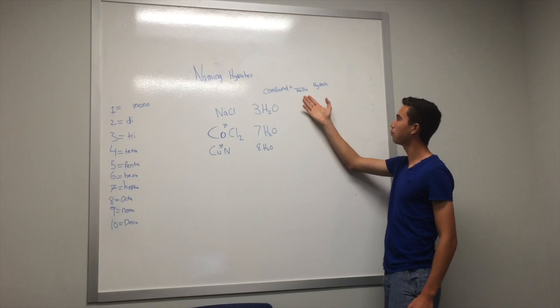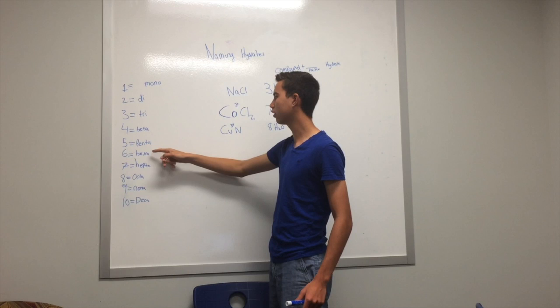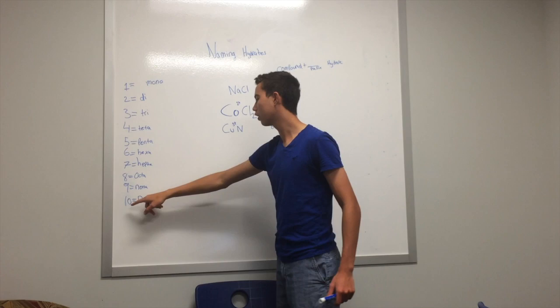Here are the prefix table. 1 stands for mono, 2 stands for di, 3 stands for tri, 4 for tetra, 5 for penta, 6 for hexa, 7 for hepta, 8 for octa, 9 for nona, and 10 for deca.